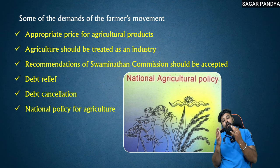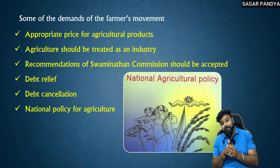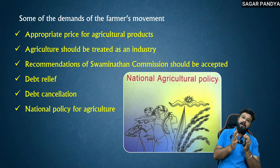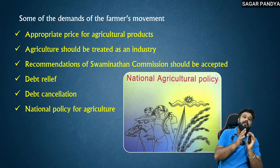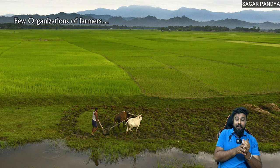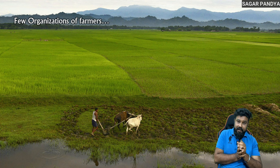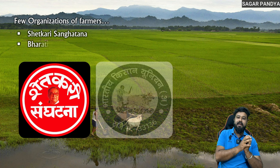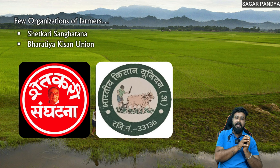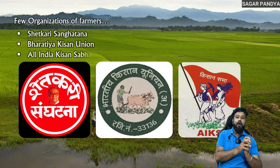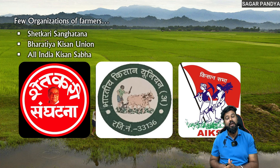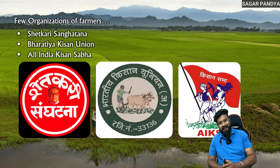So many such organizations came together. The Swaminathan Commission was a government body, but besides this, non-government organizations also came forward for farmers, like Shetkari Sanghatana, Bharatiya Kisan Union, and All India Kisan Sabha. So the farmers movement is also an important topic that can come in the exam.